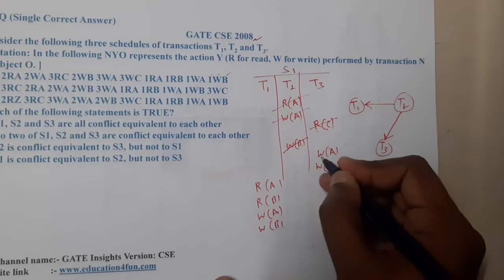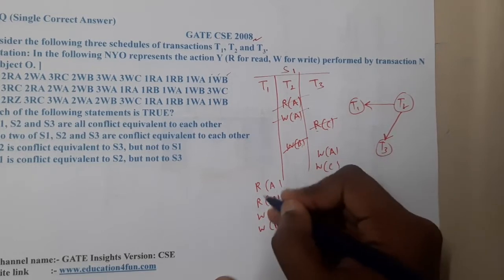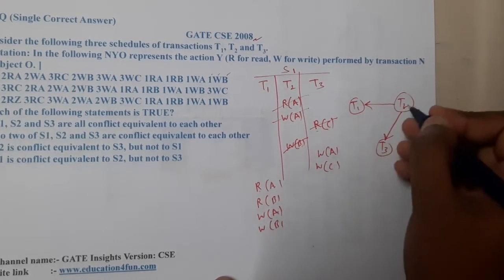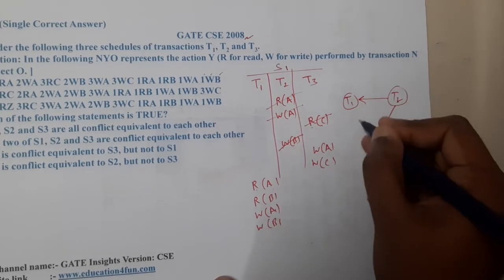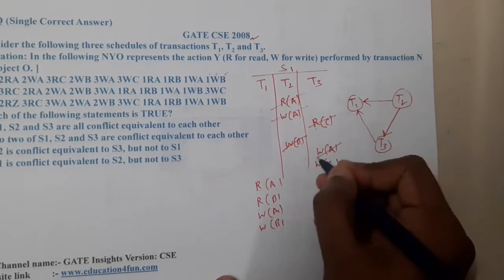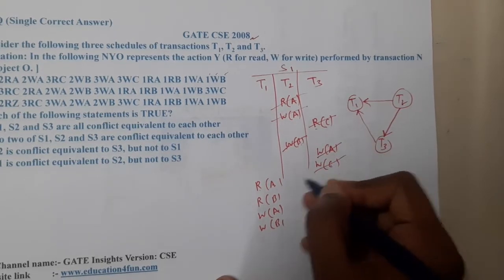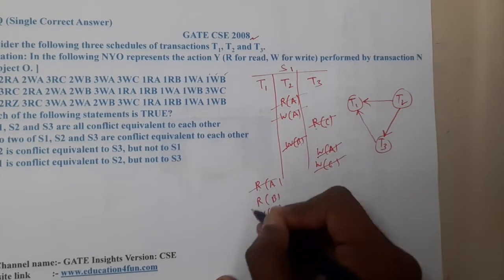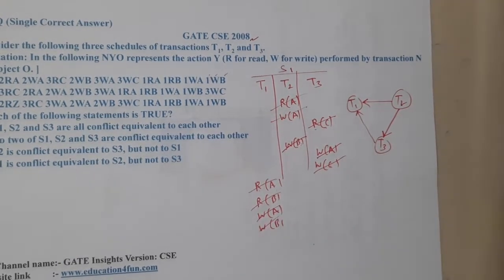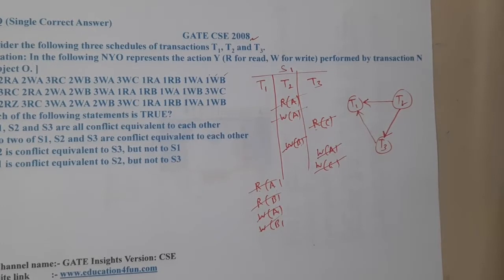Write A: here we are writing A, and there is also a write and read of A elsewhere, so basically there is an edge from T3 to T1. Moving on to Write C — it appears only once, so no issue. This is our final diagram for S1.